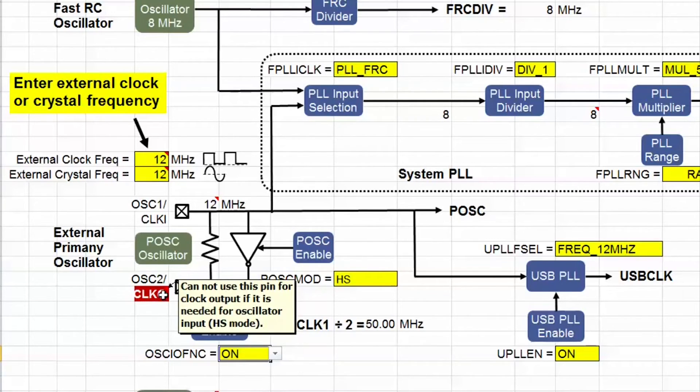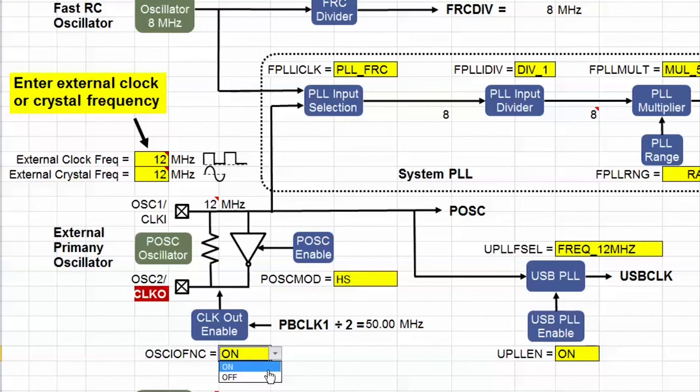This message box says I can't use this pin as an output clock if it is also needed for a crystal input. I can disable the clock out with this setting here.